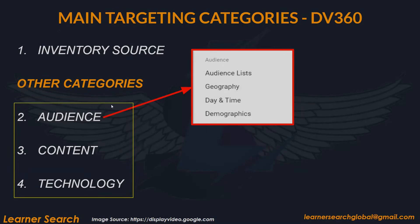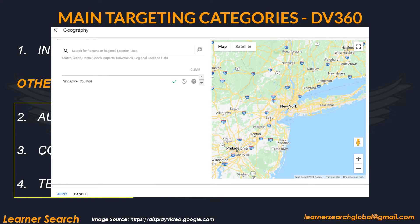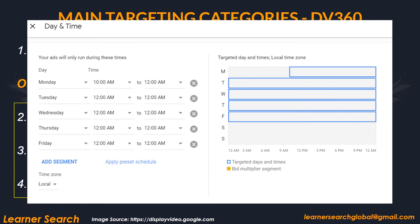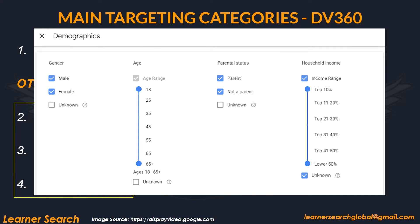One is audience. In the audience targeting category, we can see there are four options available. One is audience list, which contains affinity, in-market, and others. Next is geography, day and time, and demographics, which involves age, gender, parental status, etc.